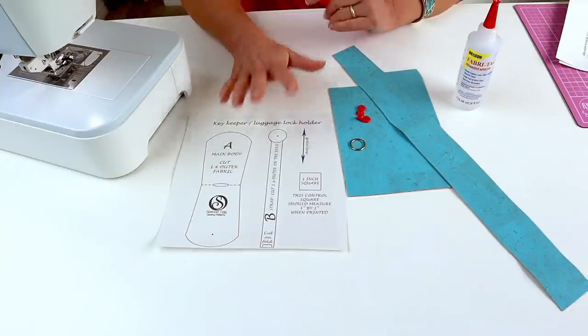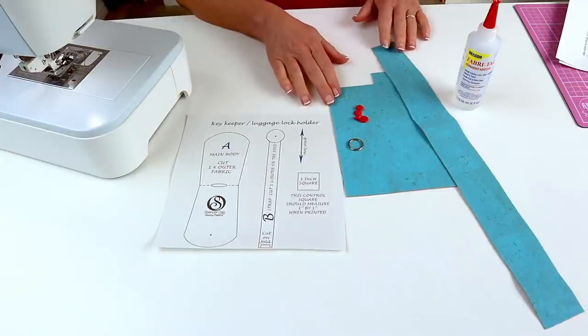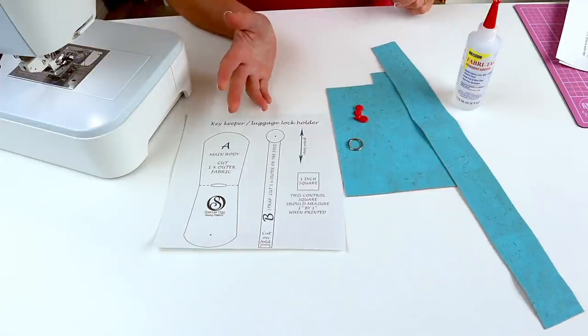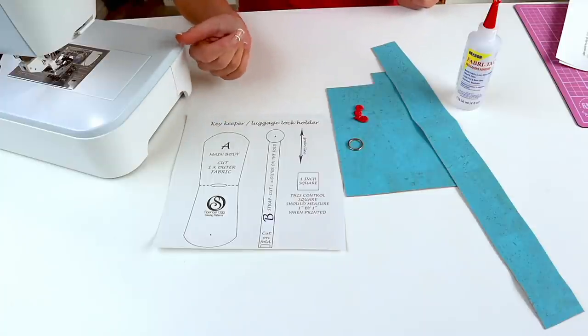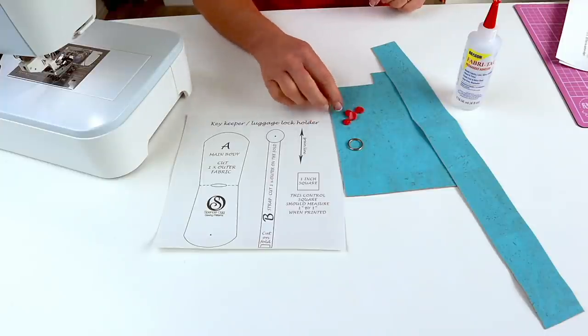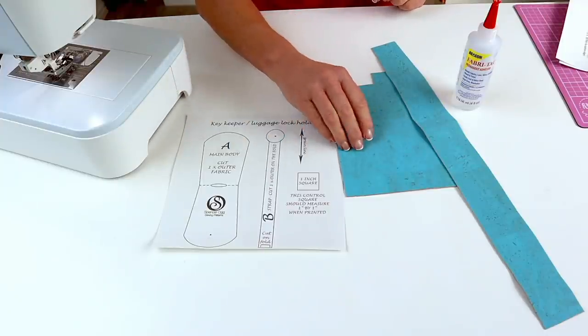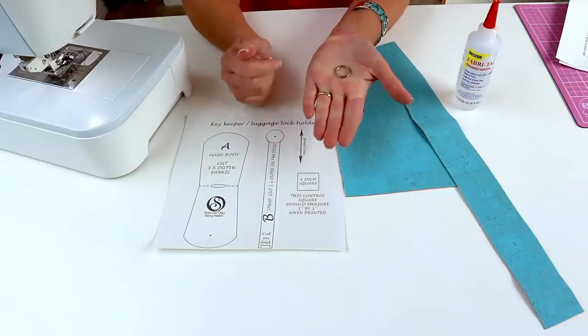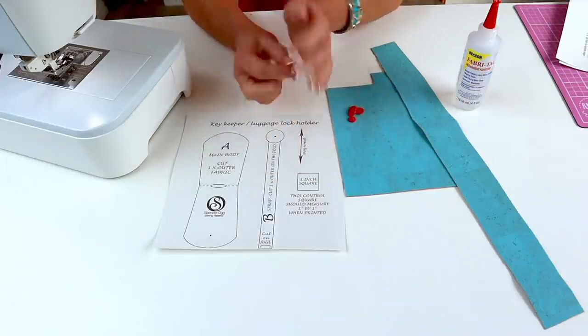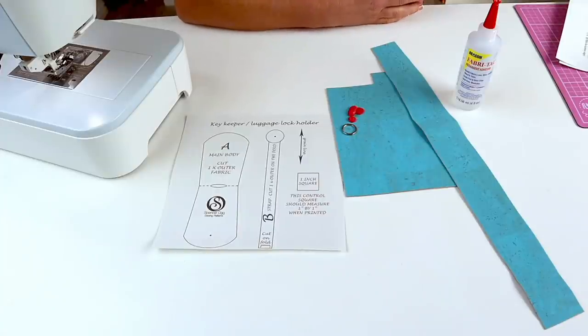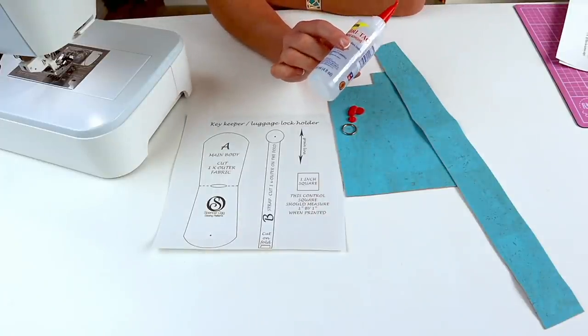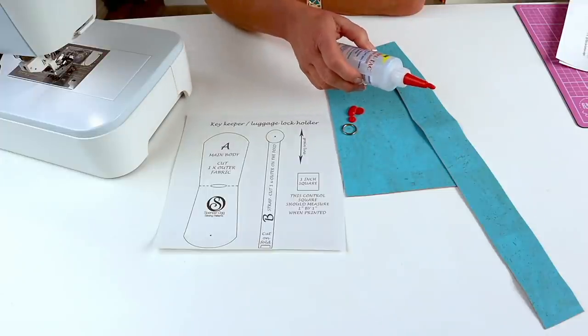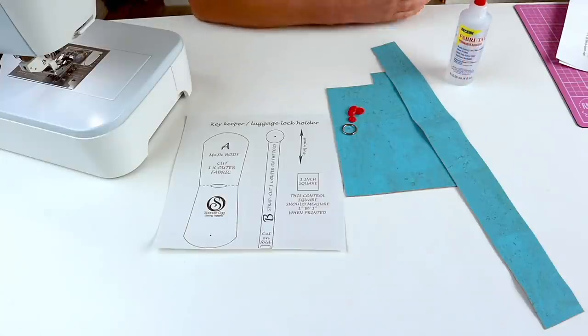Things you'll need for the project: obviously print your pattern pieces off. We're going to need a scrap of outer fabric—that could be anything that doesn't fray, cork, leather, vinyl, oil cloth. We need some all-purpose thread to match, a set of plastic snap fasteners, and for this project we need a split ring. I've used a three-quarter inch one, but have a ferret around in your hardware drawers. Optional, I'm going to use a little bit of glue—this is Fabric Tac permanent adhesive for fabrics—or you can use a little bit of double-sided tape, or you don't need to use anything at all.